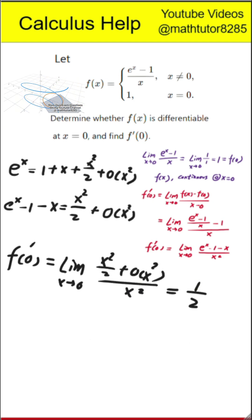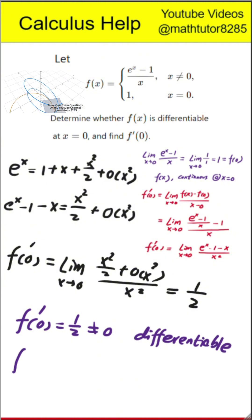Hence, f prime of 0 equals 1 half. Next step, conclusion. Therefore, f of x is differentiable at x equals 0 and its derivative at that point is 1 half, which is not 0.